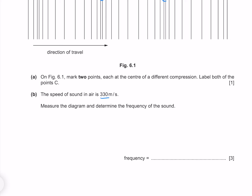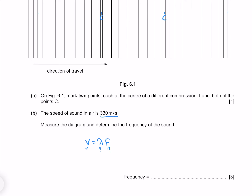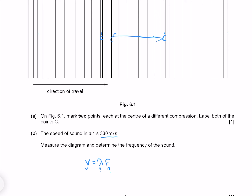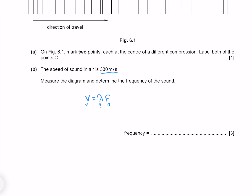The speed of sound in air is 330 m/s. Measure the diagram and determine the frequency of the sound. To determine frequency we use wave velocity equals wavelength times frequency. We know the speed of sound and need to find frequency, but we need the wavelength — which we measure from the diagram. If printed on A4, the mark scheme says this should be about 0.052 meters. Rearranging for frequency gives 330 divided by 0.052, giving me 6300 hertz.